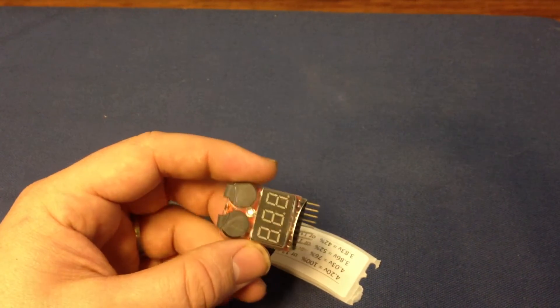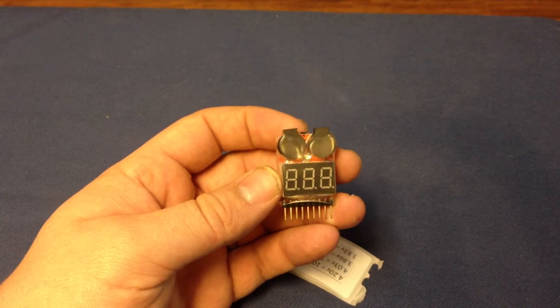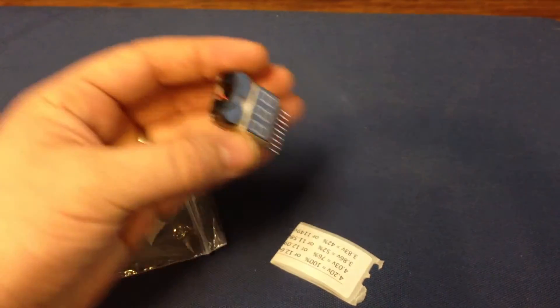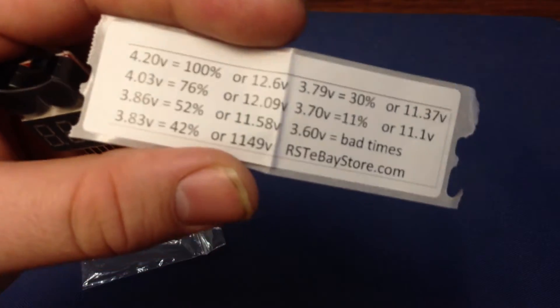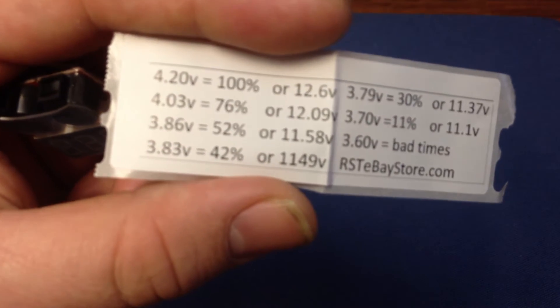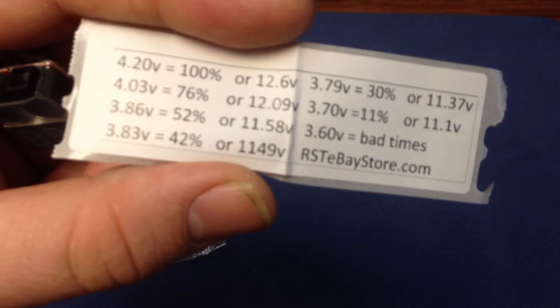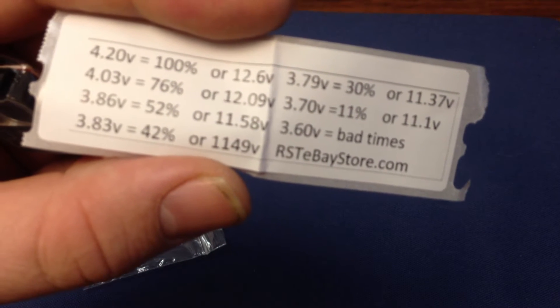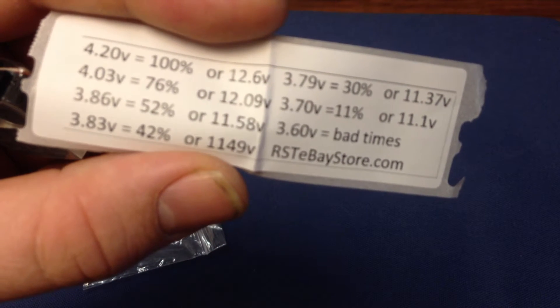Here's a quick video to show how these lipo voltage testers work. The ones I sell come with a little cheat sheet that you can put on your battery and it will show the voltage. 4.2 is 100 percent and just goes down the line. 3.7 is 11 percent.